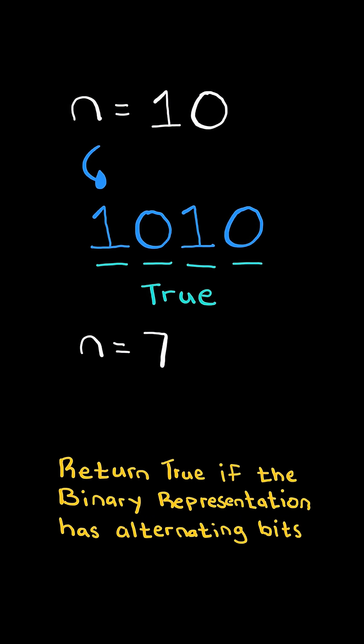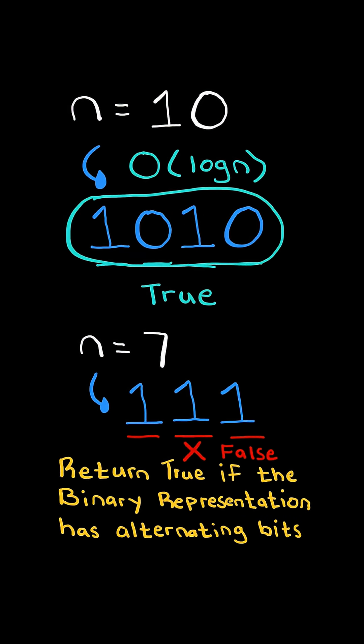Consider this new example n equals 7, and consider its binary representation. It does not alternate bits, so we return false. We will solve this in O of log n time, which is proportional to the number of bits in the binary representation.